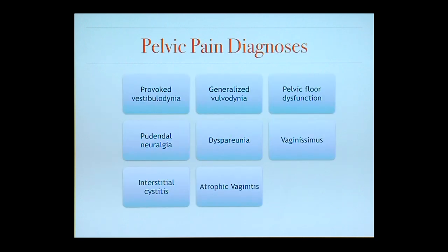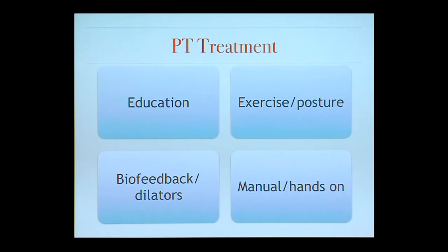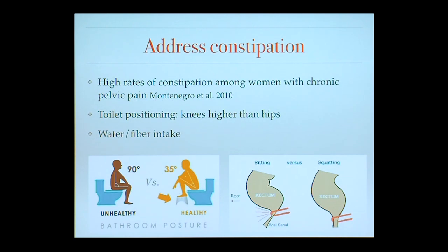There is an incomplete list of pelvic pain diagnoses we treat in physical therapy — multiple diagnoses exist. For pelvic pain treatment, categories include patient education, exercise and posture, hands-on manual work, and other treatments including biofeedback and vaginal dilators. Women with chronic pelvic pain have higher rates of constipation, so we address that in PT. The squatting position — putting a footstool or squatty potty around the toilet — changes the inner rectal angle and loosens the puborectalis muscle, facilitating voiding. We educate women about this.